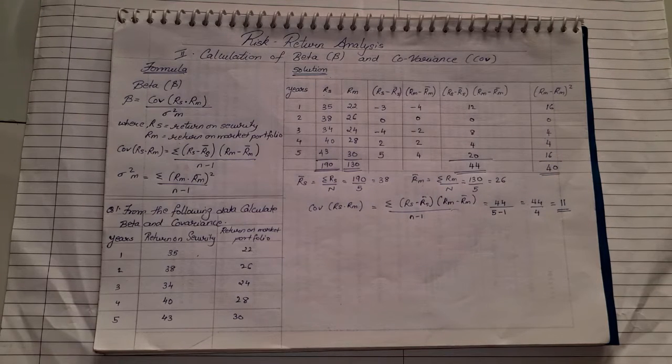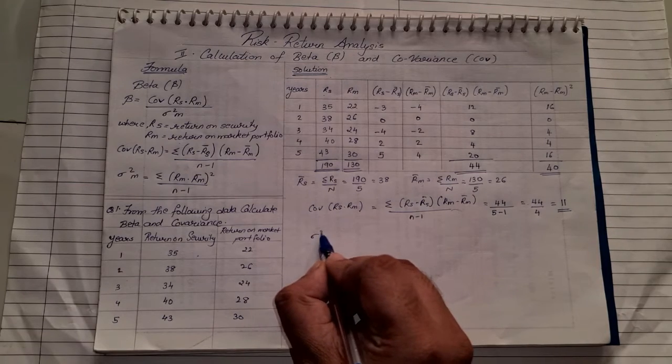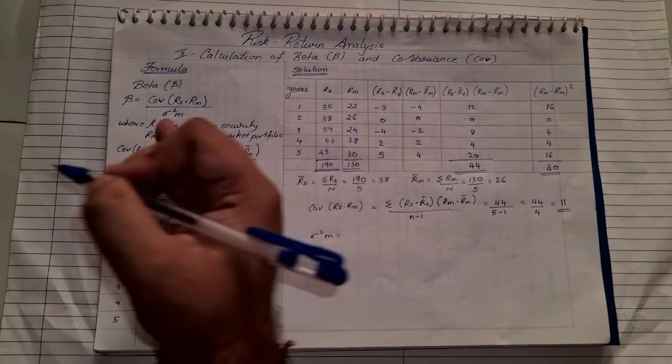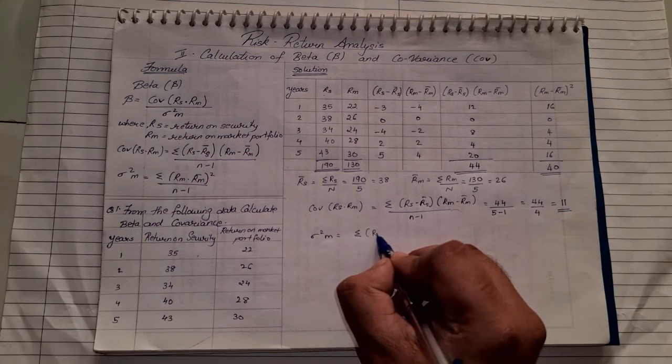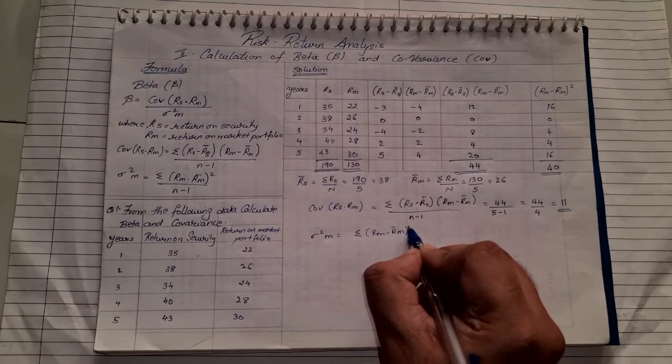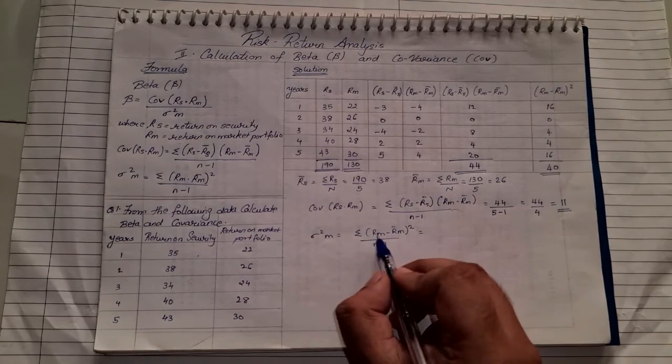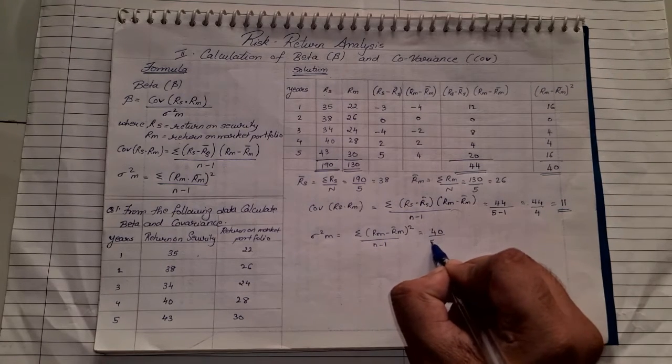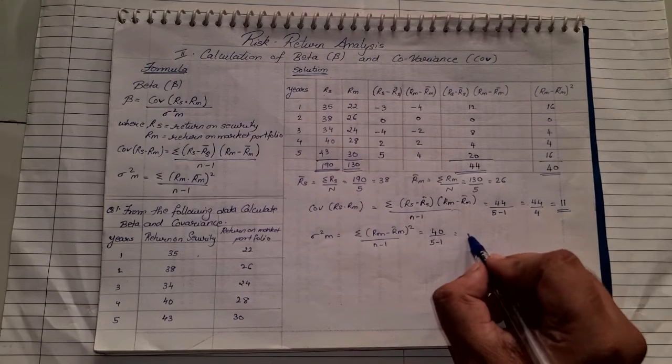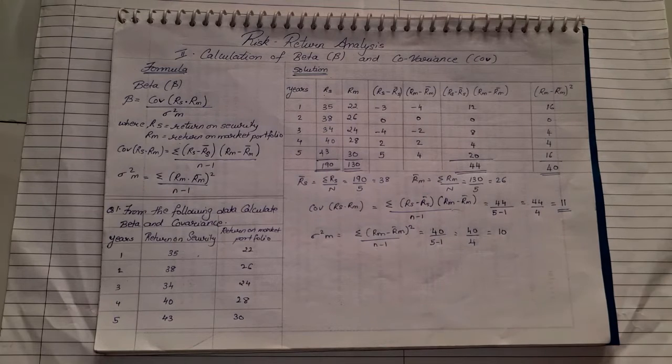So that's the first thing we have found. Now second, we need to find the standard deviation square M, which is the denominator for beta. That will be Σ(RM - R̄M)² / (N-1). Now (RM - R̄M)² summation is 40, the total. And bottom is 5 minus 1. So it will be 40/4, which comes to 10.